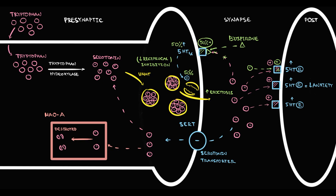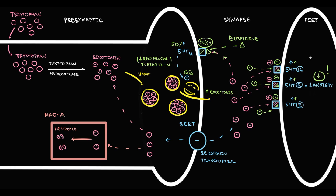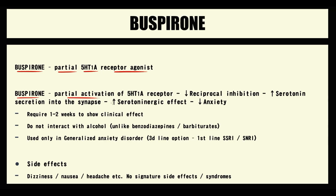From this point, step by step, serotonin molecules begin to accumulate in the synapse. Serotonin molecules search for receptors on the postsynaptic neuron and, once they bind, activate them. Even more serotonin accumulates in the synapse, causing even more receptor activation. The higher the stimulation of serotonin receptors, the higher the serotonin effect, and thereby the lesser the anxiety. So buspirone provides partial activation of the 1A serotonin autoreceptor, causing decreased reciprocal inhibition, increased serotonin secretion, and ultimately reduced anxiety.